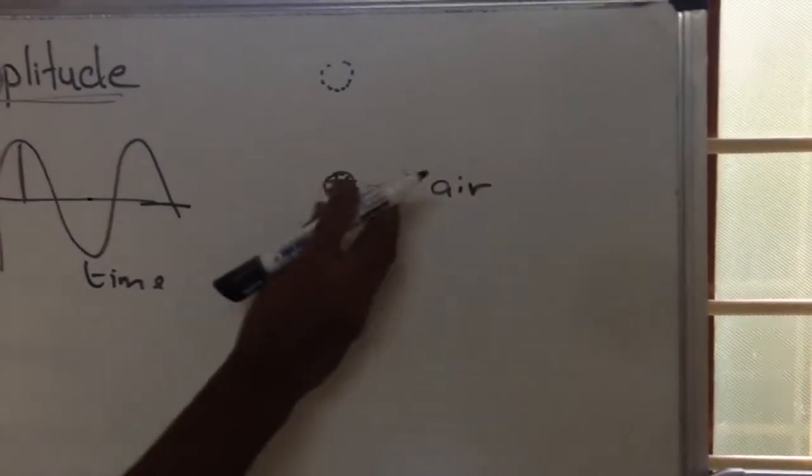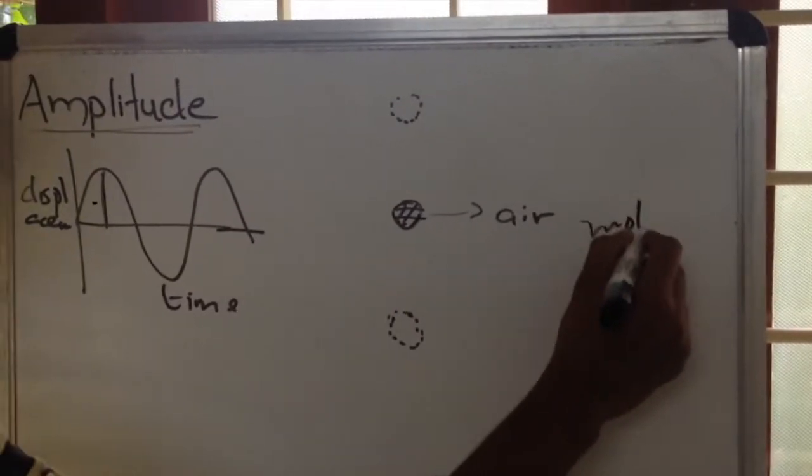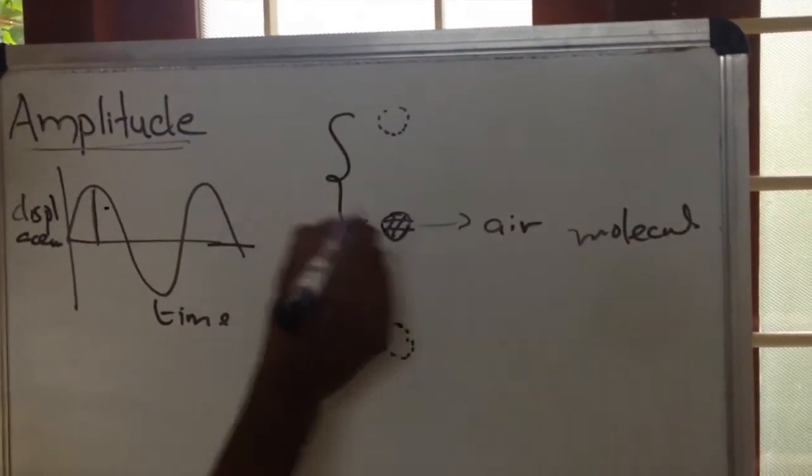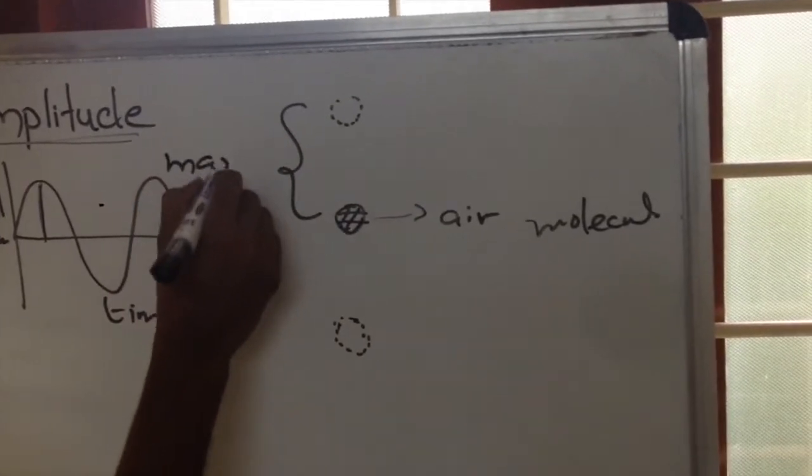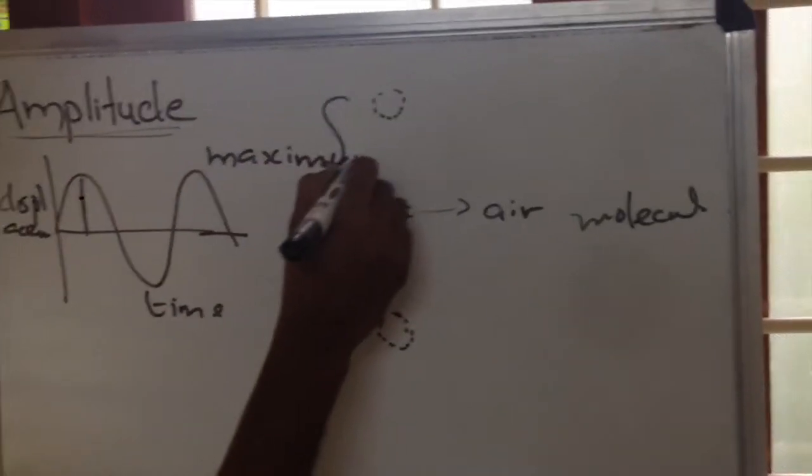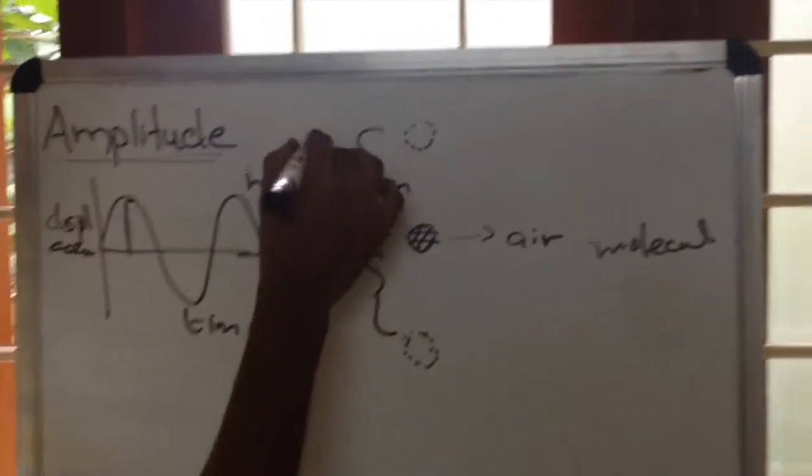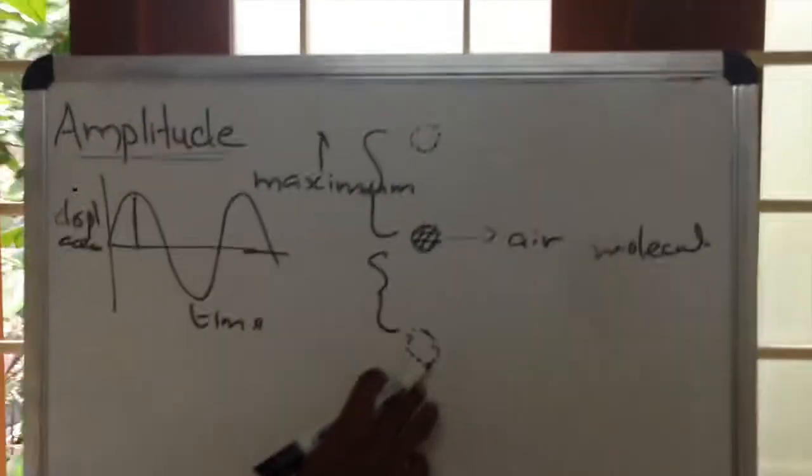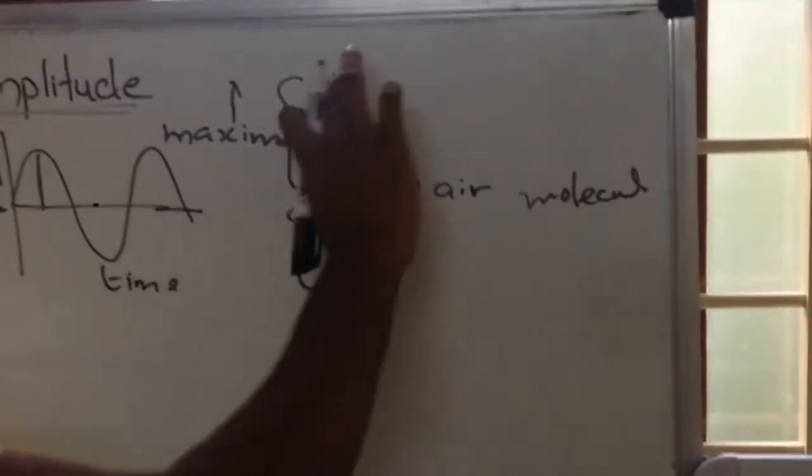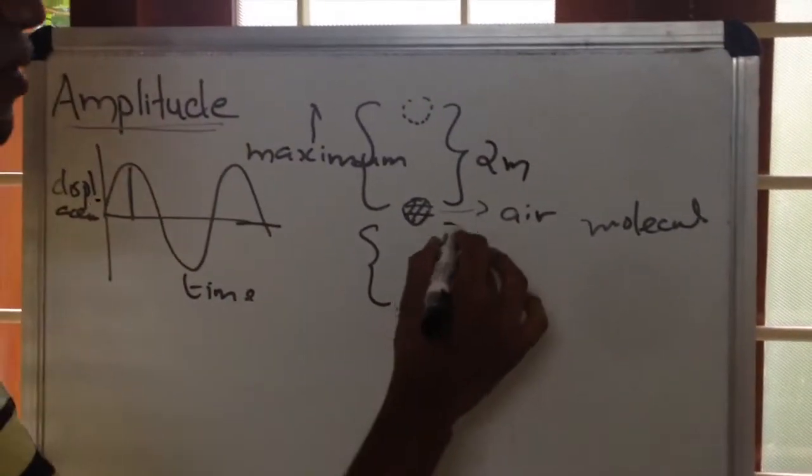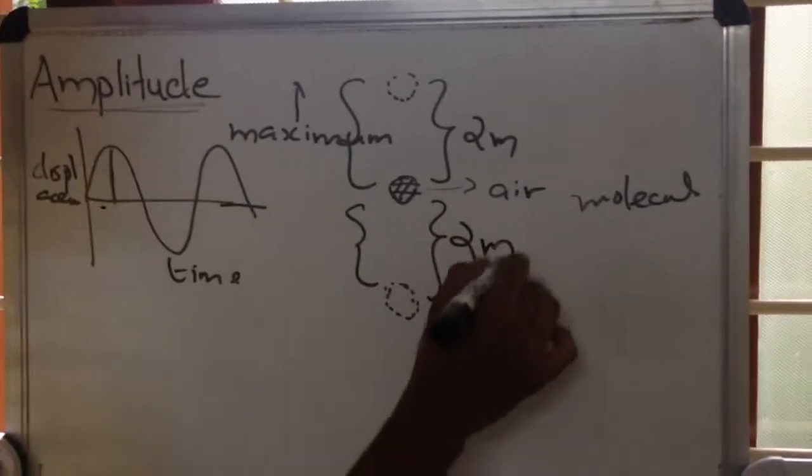When this air molecule is vibrating, it will have a maximum displacement towards the upward direction and it will have a maximum displacement towards the downward direction. Say that this maximum displacement is 2 meters, then obviously it will be sent towards the downward motion to 2 meters.